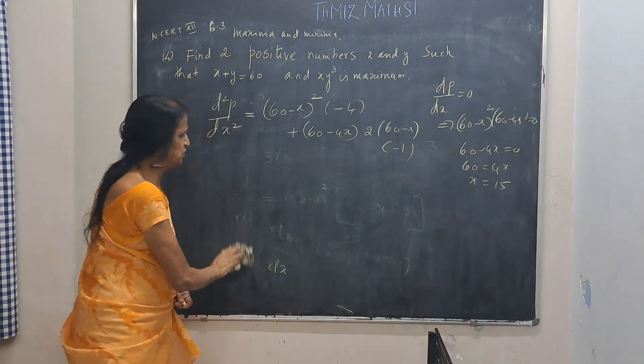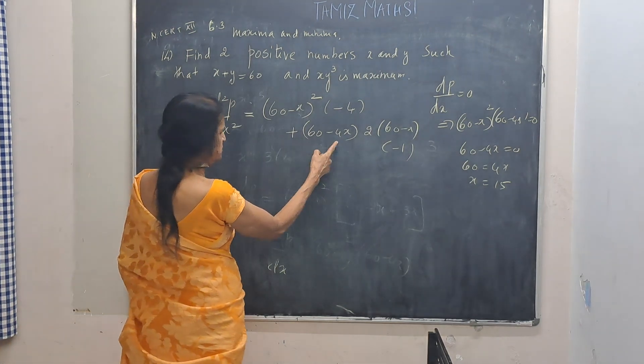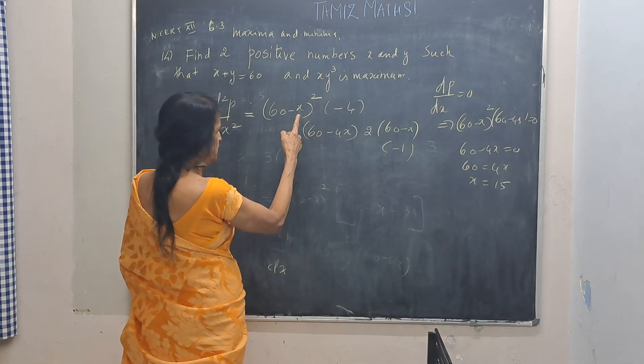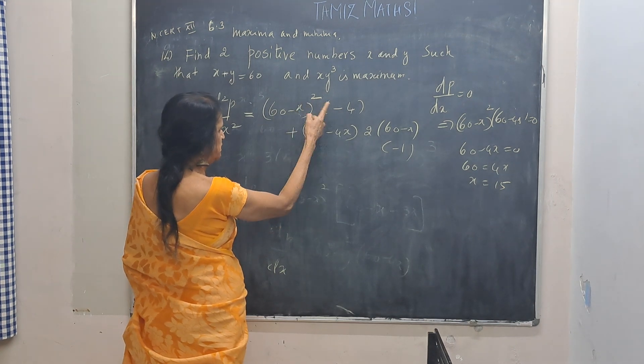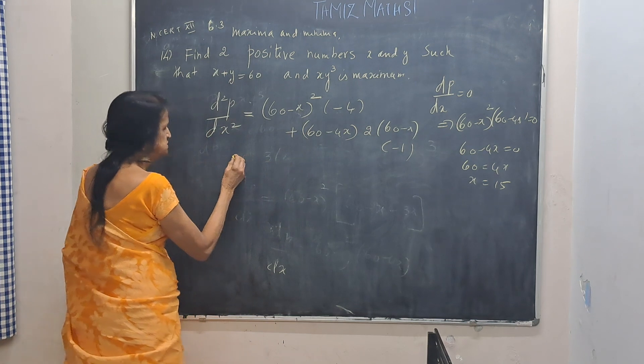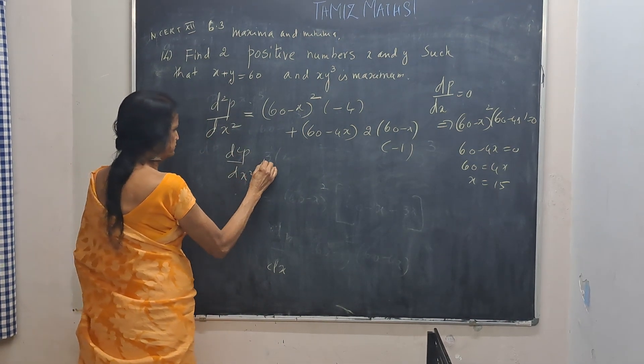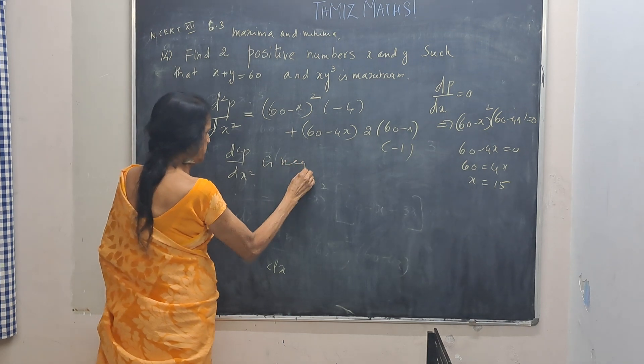Now x is equal to 15. When x is 15, this will become 0, and this will become negative whole square. In front you have a minus 4, so this will become negative. So second derivative is negative. That means we always get the maximum.